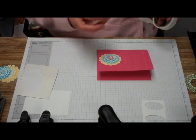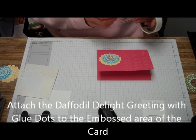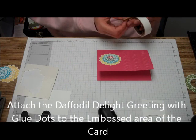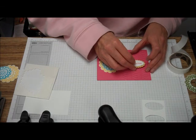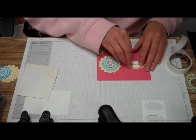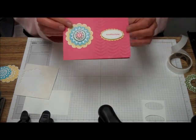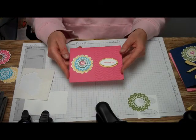We're going to attach the Thinking of You. Take our glue dots, two little glue dots, and attach the Thinking of You right across from the Quintessential Flower. There's your card.